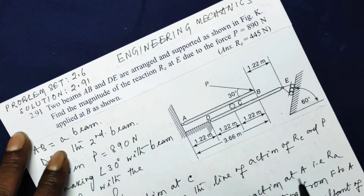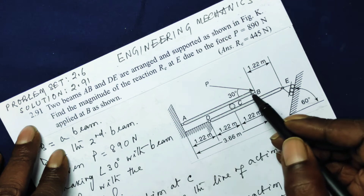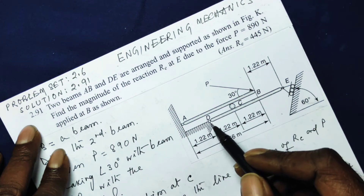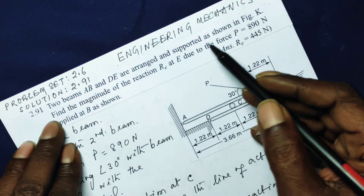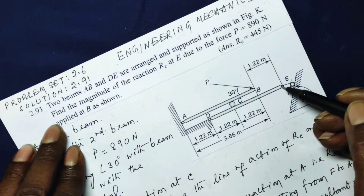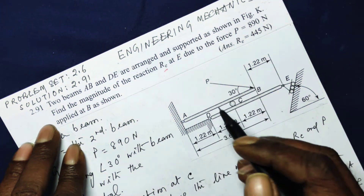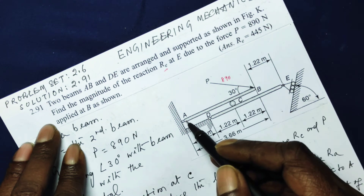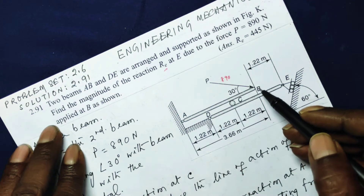Let us read out the problem statement. Two beams AB and DE are given. AB is a beam, and DE is also a beam. AB is pin jointed at one end; DE is pin jointed at two points, and both are supported as shown in the figure. We need to find the magnitude of the reaction RE at point E, due to the force P equal to 890 Newton, applied at point B making an angle of 30 degrees with the horizontal.